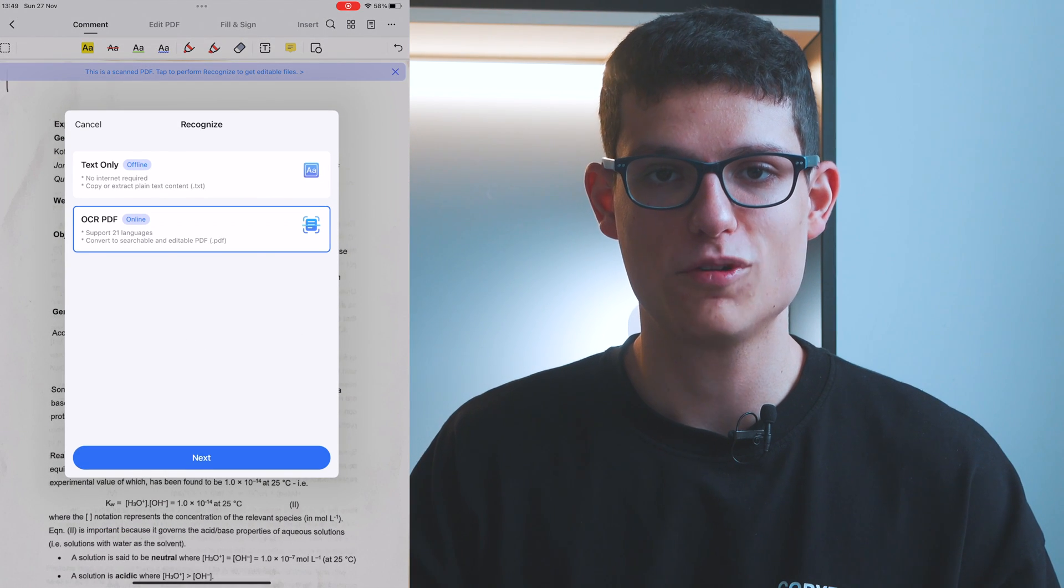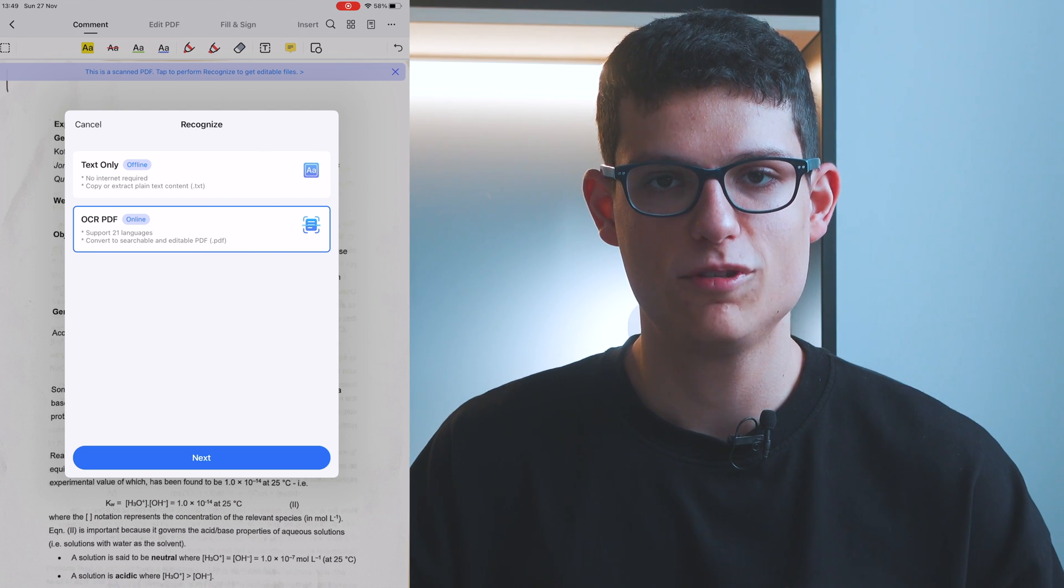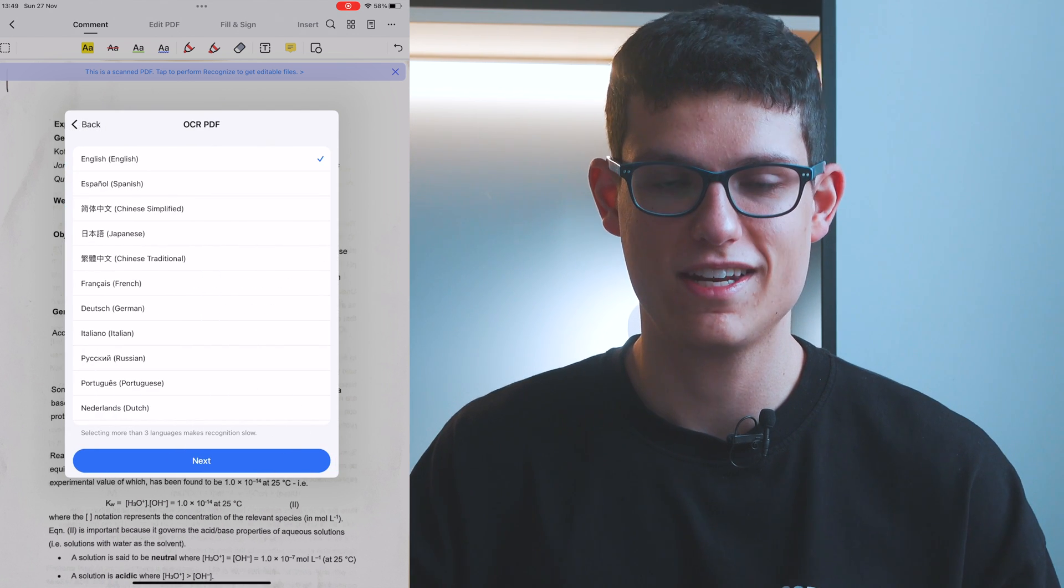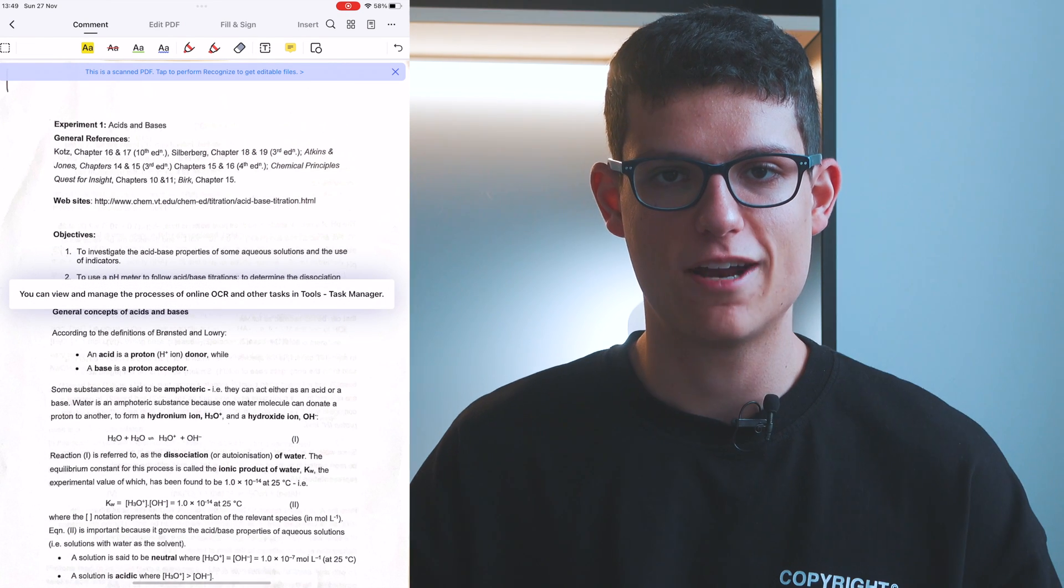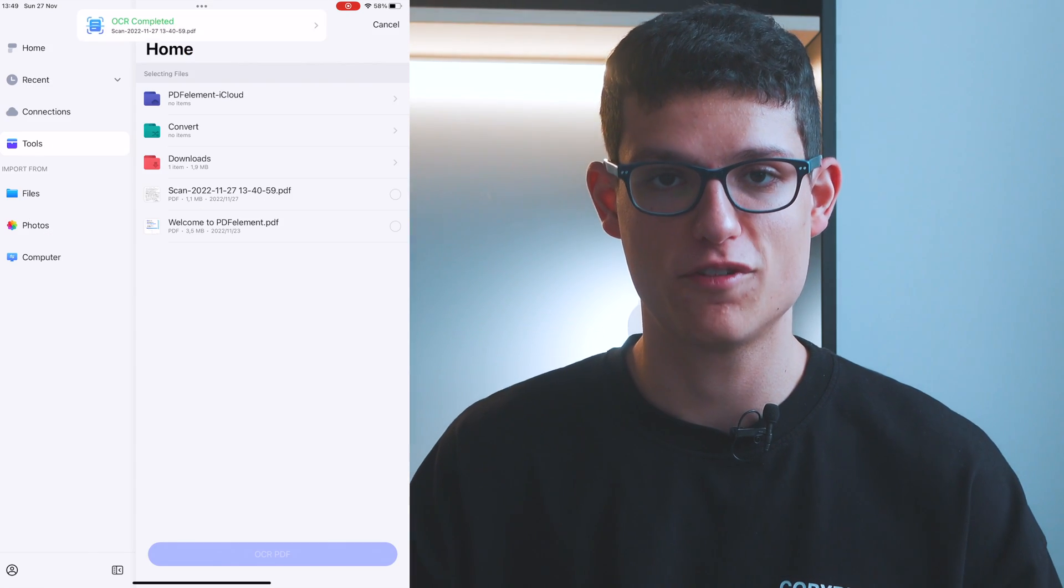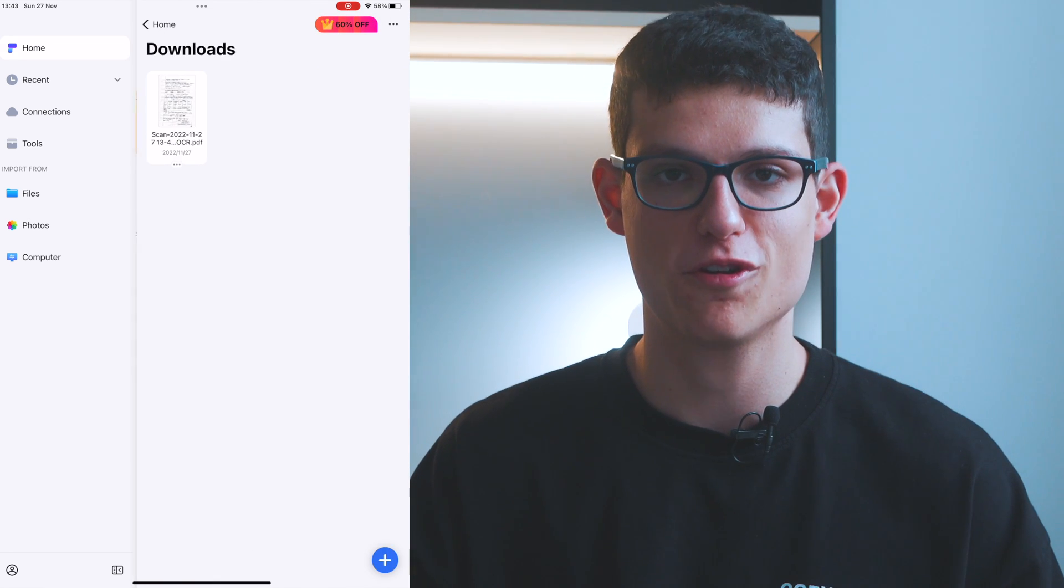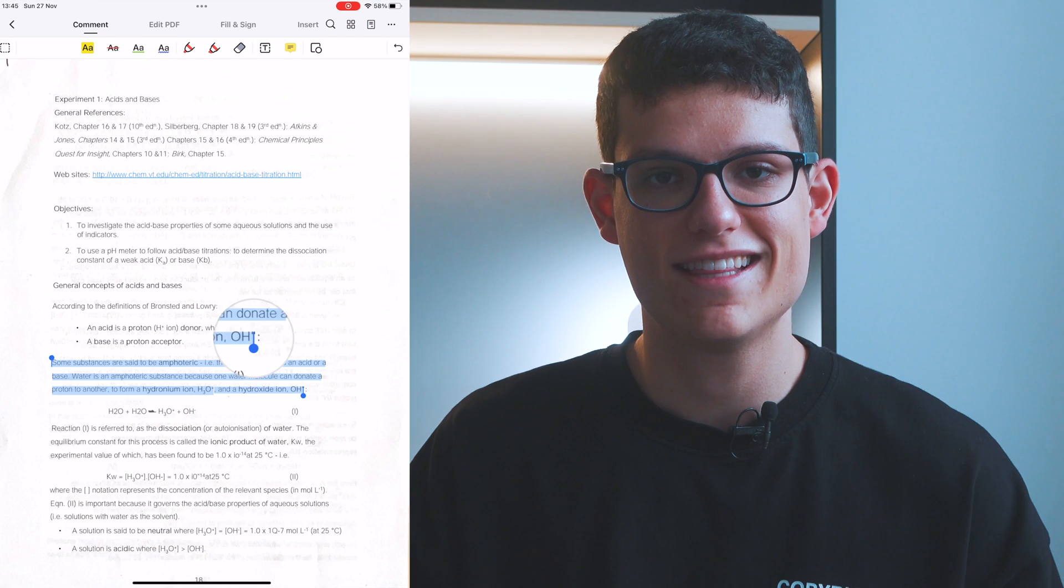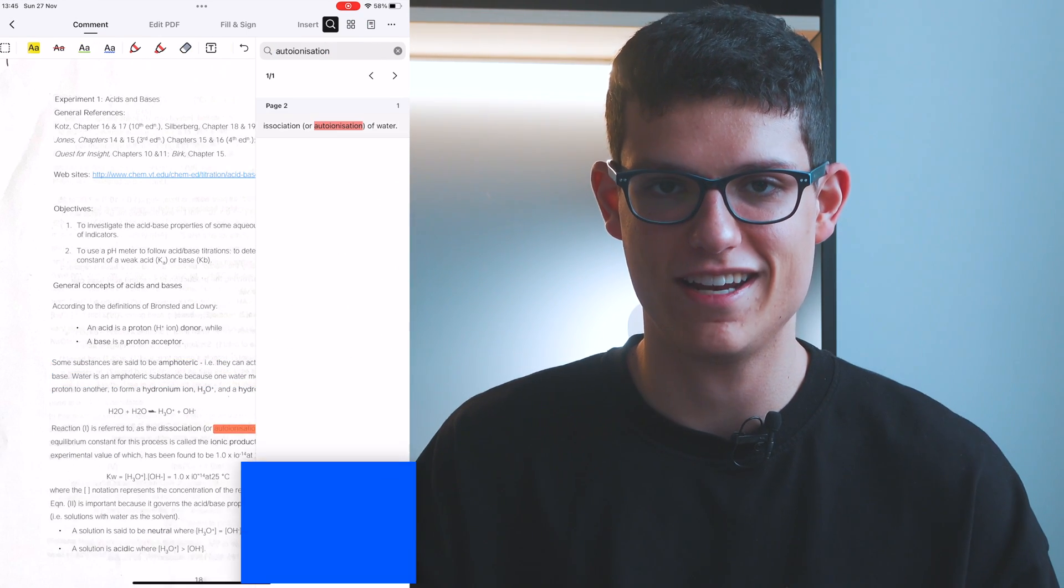You will now select the option of OCR PDF, but before that make sure that you are connected to the internet. Then you will choose the language that your document is written in and hit next so that PDFElement starts the conversion. A notification will pop up at the top of your screen when the conversion is done and you will then be able to find your document in the downloads folder. And that's it. You can now edit the document and search for any words that are in it.